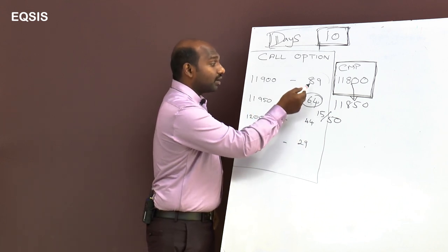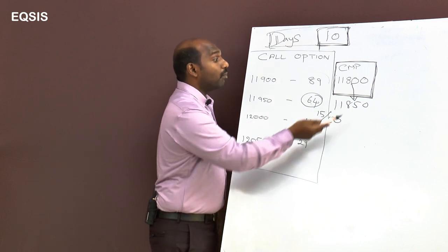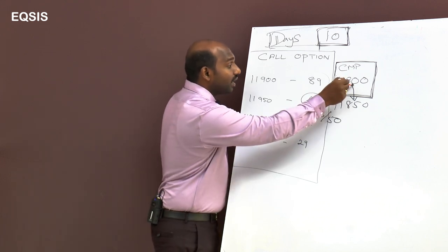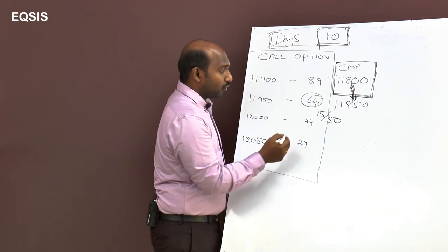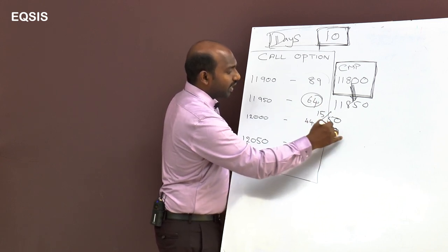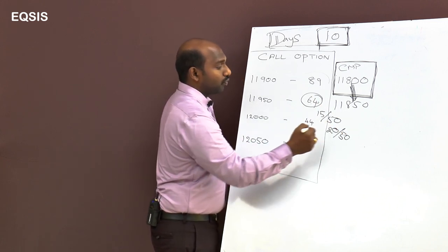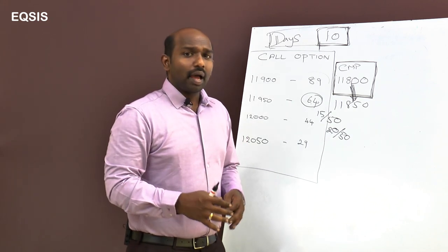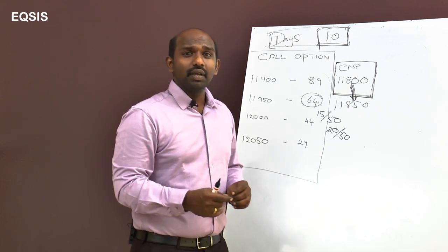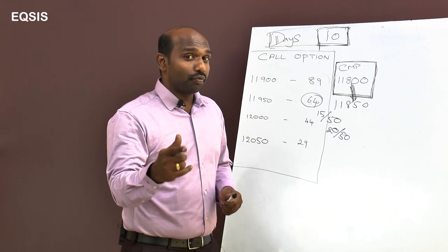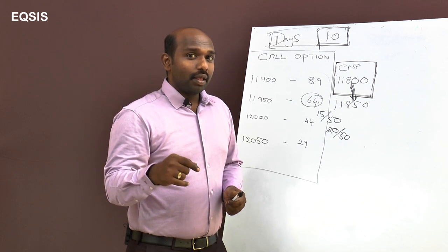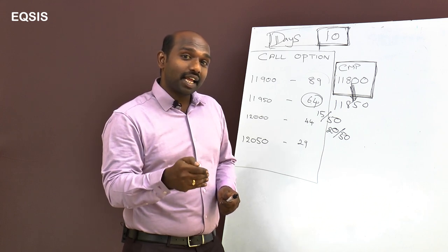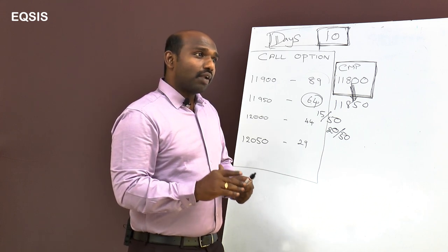When the market increases by 50 rupees to 11850, the 11950 call goes from 64 to approximately 89 — a gain of about 25 rupees. At the same time, the 12000 call goes from 44 to approximately 64 — a gain of about 20 rupees. So you can see there's a different change in premium for each strike when the underlying moves by 50 rupees. This is essentially what delta captures.